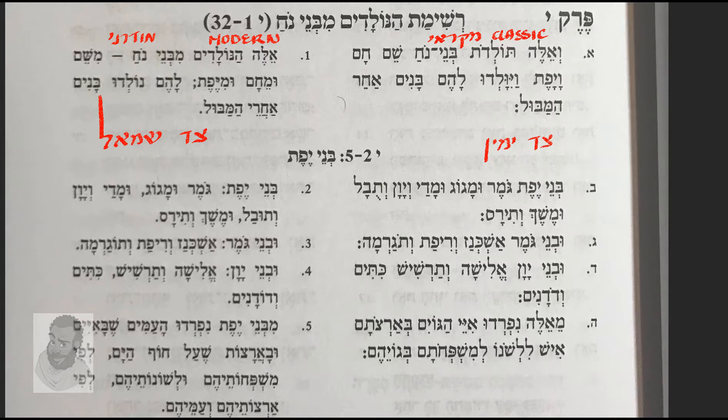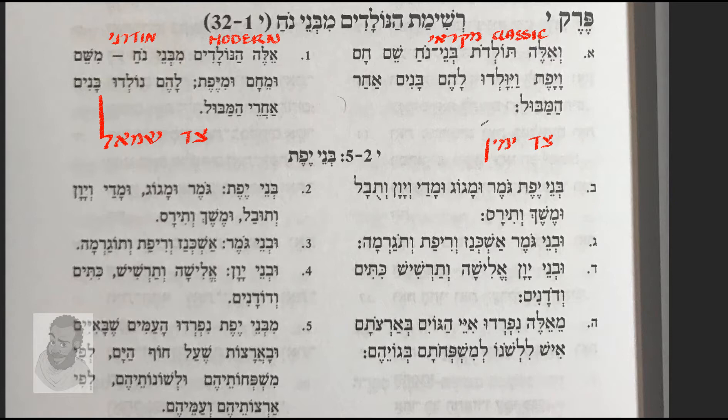In Biblical Hebrew there are many changes in accents. One of those changes would be to a person's name. When you are nearing the end or are at the end of a phrase or sentence, the name or word changes either to add emphasis or to show that there is a period or some type of punctuation. There was no punctuation in classical Hebrew.